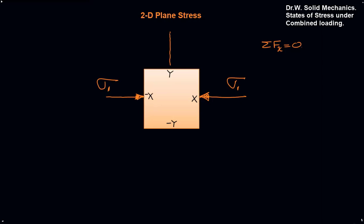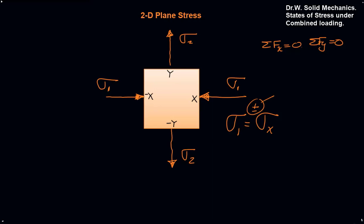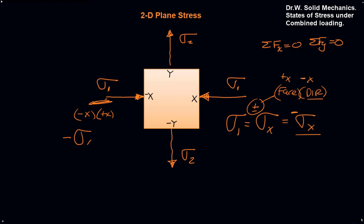Looking in the y direction, let's give the y-face a positive tensile stress — stress two. By summing the forces in y equal to zero, there would have to be an equal but opposite stress two on the other face. Stress one would be called sigma x, and the sign is based on the face it's on and the direction. This is on the positive x-face acting in the negative x-direction, so that's negative sigma x. On the negative x-face acting in the positive x-direction, that's also negative sigma x.